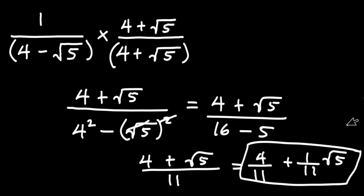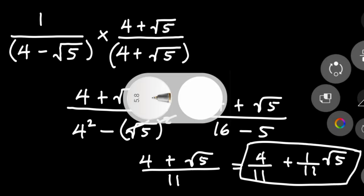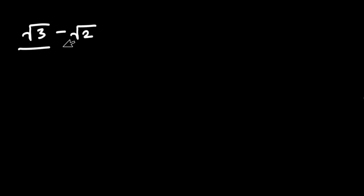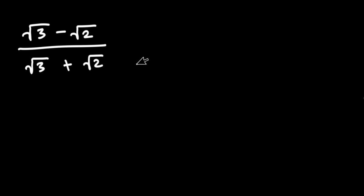Now let's simplify another fraction which involves a radical sign on the denominator side. We have square root of 3 minus square root of 2, all divided by square root of 3 plus square root of 2. Go ahead and pause the video and give this one a try first. If you're done you can come back to the video. So let's get started.